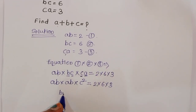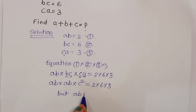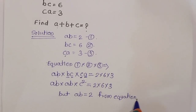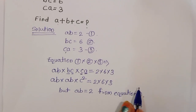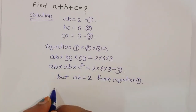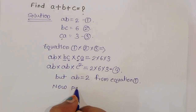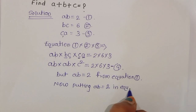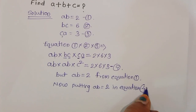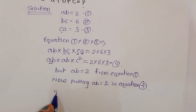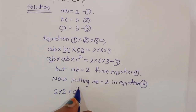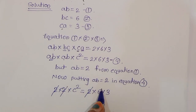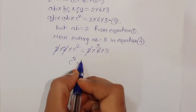But we know that AB is equal to 2, from equation 1 as given in the question. Substituting AB equals 2 into equation 4: 2 times 2 times C squared is equal to 2 times 6 times 3. Simplifying: C squared is equal to 9.